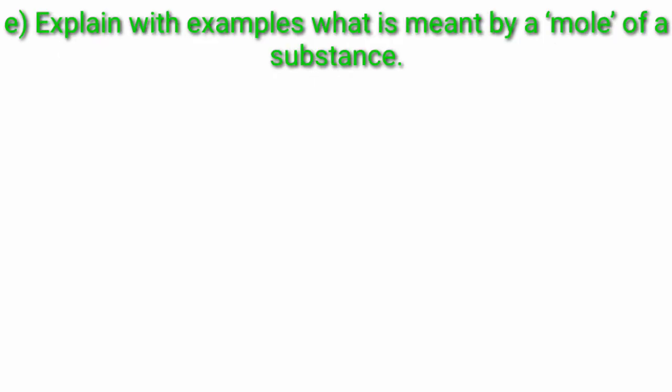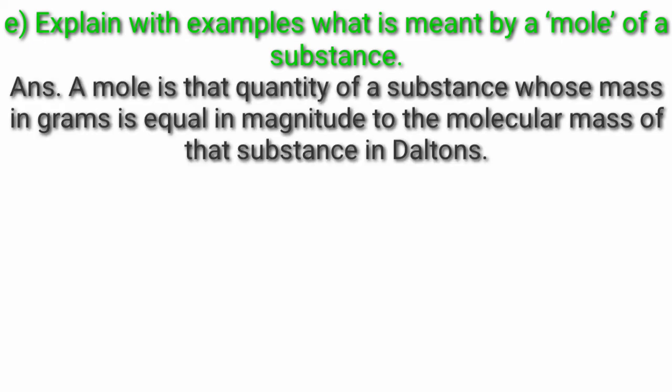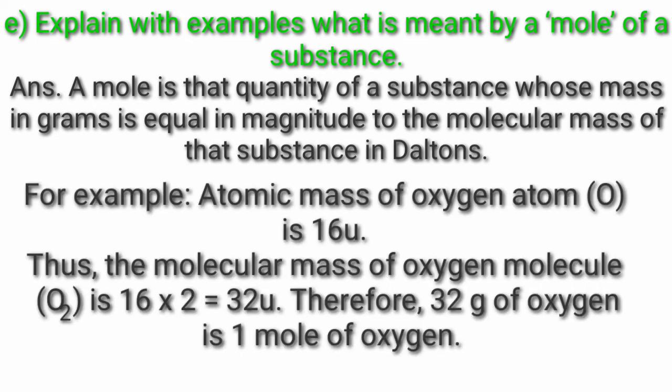Question 4E: Explain with examples what is meant by a mole of a substance. Answer: A mole is that quantity of a substance whose mass in grams is equal in magnitude to the molecular mass of that substance in daltons. For example, the atomic mass of oxygen is 16 dalton, so the molecular mass of O2 is 16 × 2 = 32 dalton. Therefore, 32 grams of oxygen is 1 mole of oxygen.